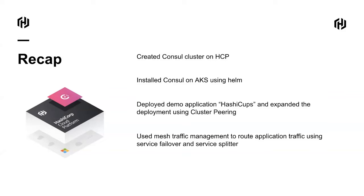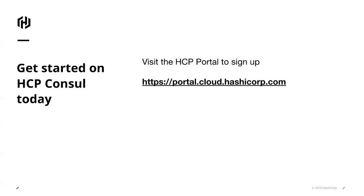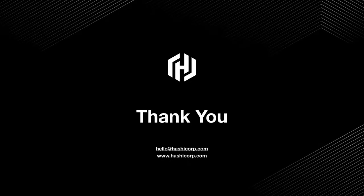Here's a recap of what we did: we created a Consul cluster on HCP and installed Consul on AKS using Helm charts. We deployed a demo application HashiCups and expanded that deployment using cluster peering. We also demonstrated mesh traffic management techniques to route application traffic. If any of this was interesting to you, please visit our HCP portal and sign up for an account — you'll get a $50 credit towards trying out Consul or any HashiCorp products.